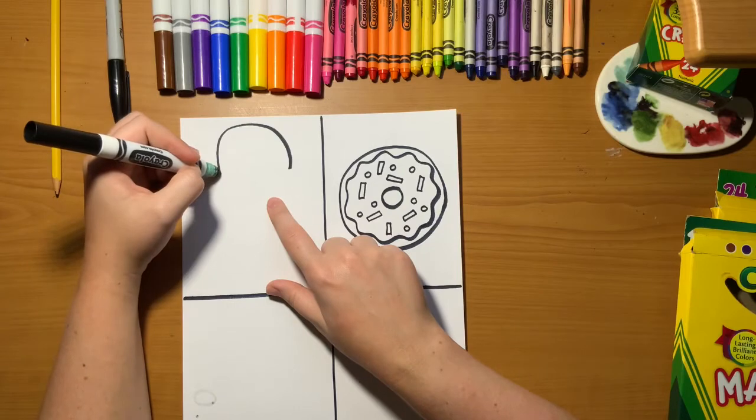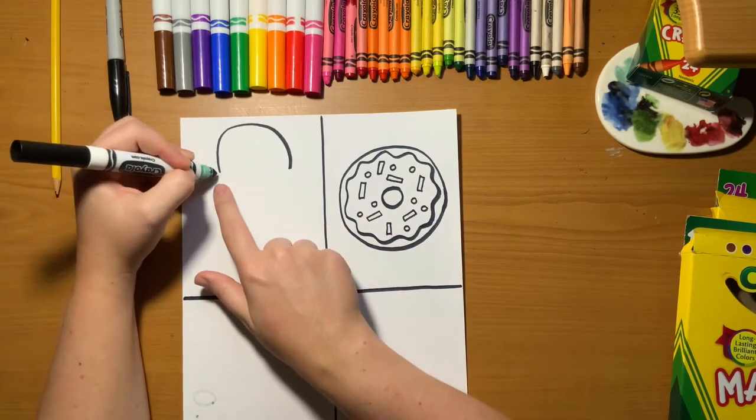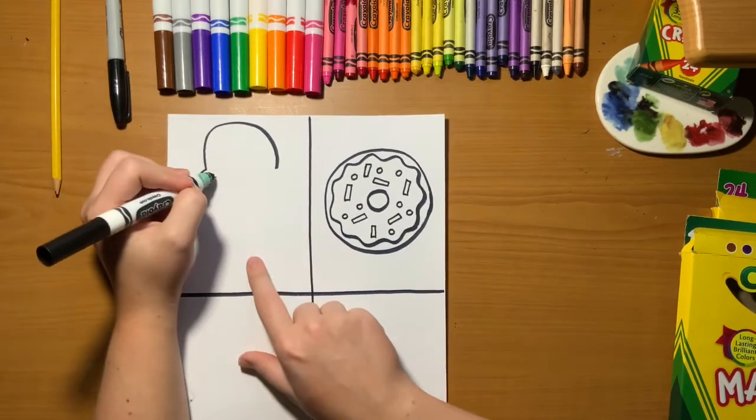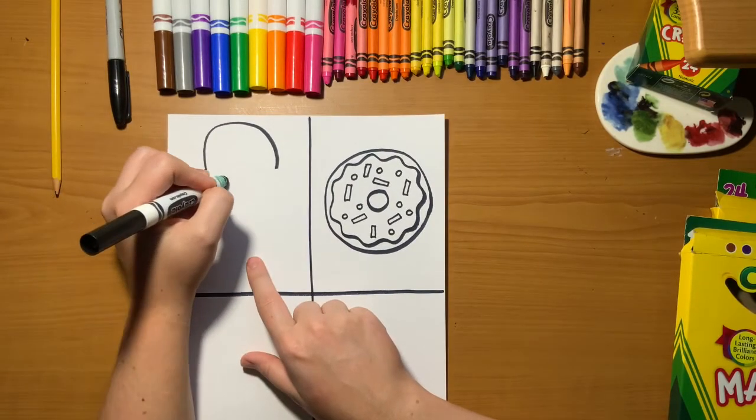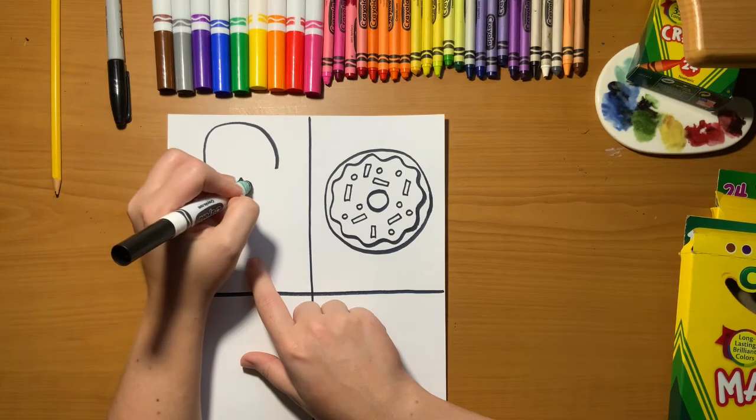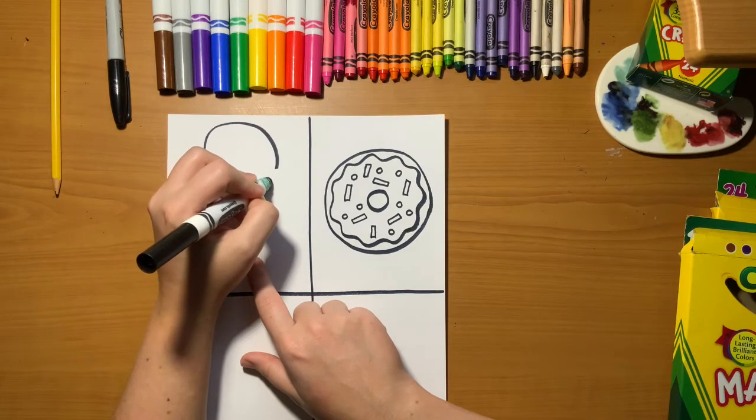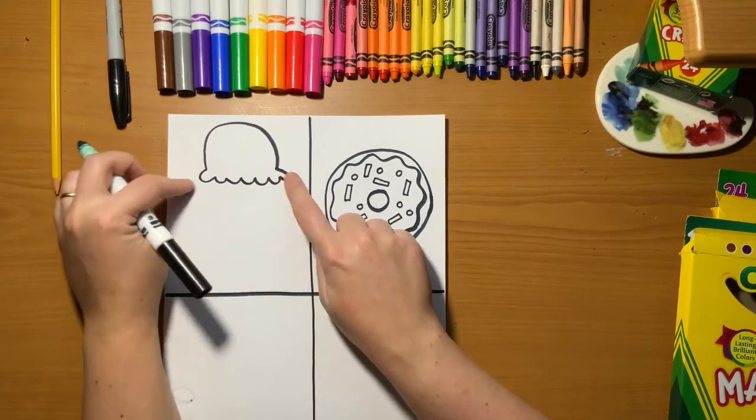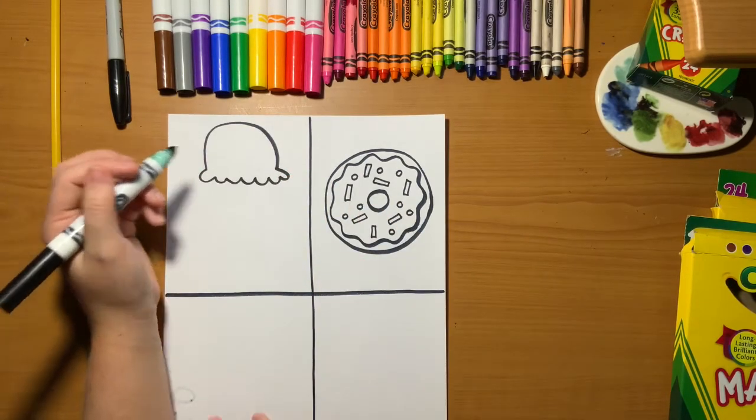First step is to draw a curved line like a rainbow line or an upside down U. Next, we're going to make another tinier curved line that comes out from the side. It kind of sticks out. Then you're going to go bump, bump, bump, bump, bump all the way across and have it stick out the other side as well. This gives us our ice cream scoop.